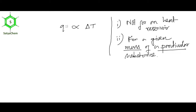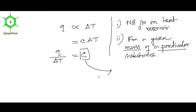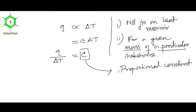So q varies as delta T, and therefore I need to put a proportionality constant. So q = C·ΔT. This constant C is a proportionality constant, and it depends on the nature and mass of the substance — it will be different for iron and copper.